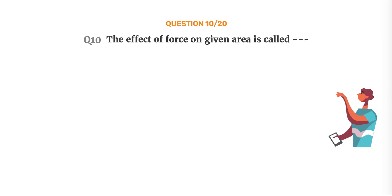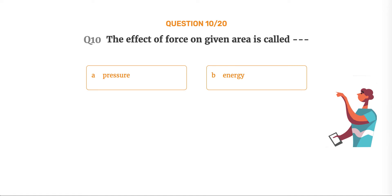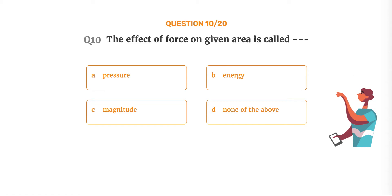Question number 10. The effect of force on a given area is called blank. Option A: Pressure. Option B: Energy. Option C: Magnitude. Option D: None of the above.